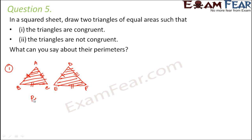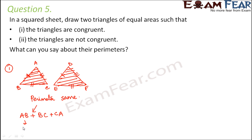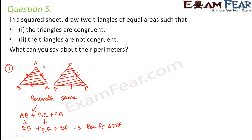So their corresponding sides and corresponding angles are also equal. Therefore, if you look at their perimeters — the perimeter of a triangle is nothing but the sum of the three sides — their perimeters will also be the same because their sides are equal. So the perimeter of triangle ABC would be AB plus BC plus CA, which equals DE plus EF plus DF, and that is basically the perimeter of triangle DEF. So perimeter of triangle ABC equals perimeter of triangle DEF.